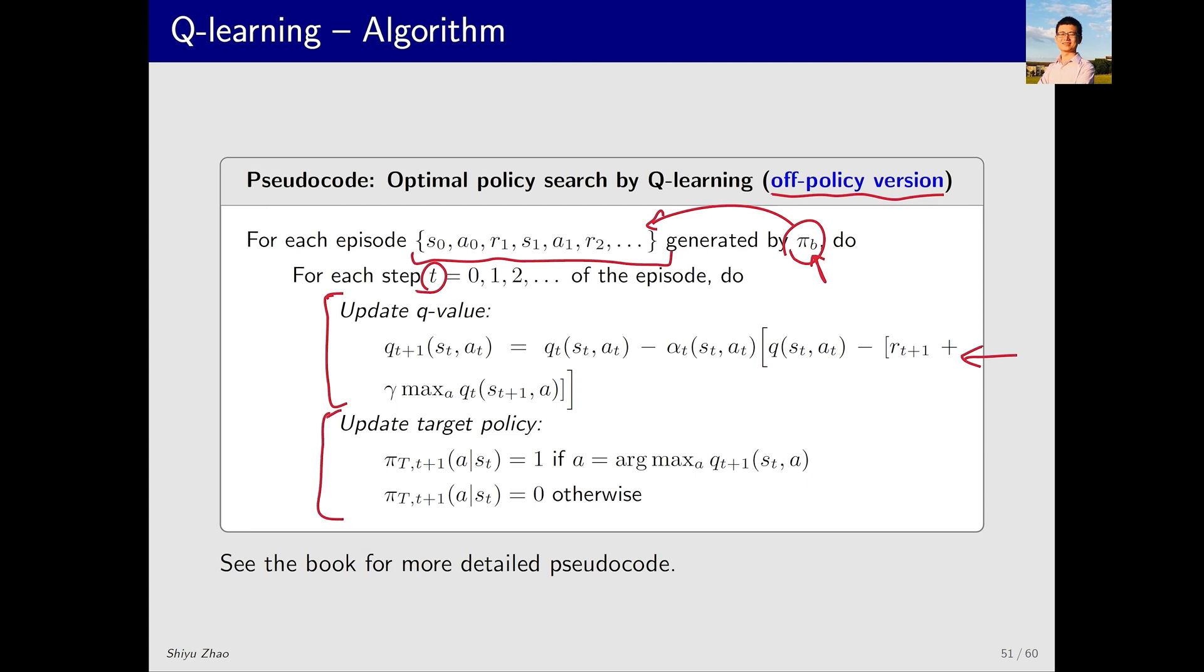Second, update target policy. This step differs from the on-policy implementation. Instead of using epsilon-greedy, we update as a greedy policy, which we name as π_T.